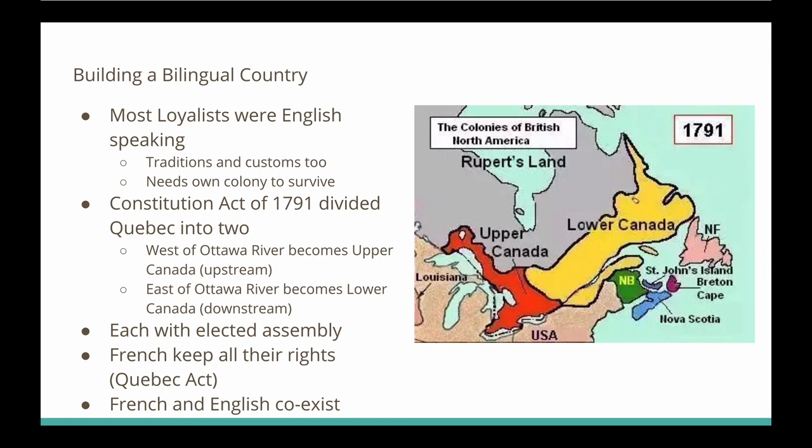There was also New Brunswick, Nova Scotia, Cape Breton, Newfoundland, St. John's, and Rupert's Land. Upper and Lower Canada each had their own elected assembly. The French in Lower Canada got to keep all of their rights from the Quebec Act. This coexistence of French and English would help Canada become its own nation as we continue through this chapter.